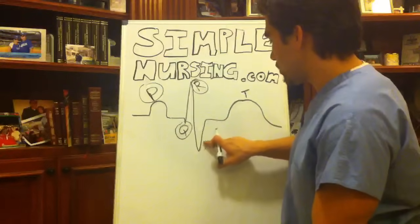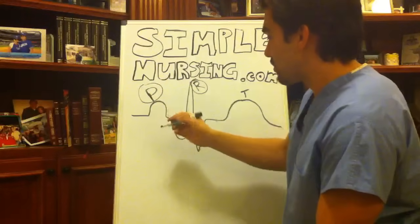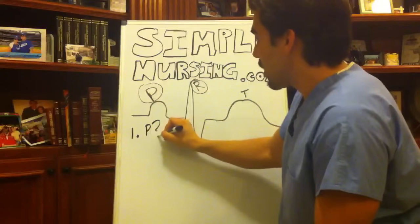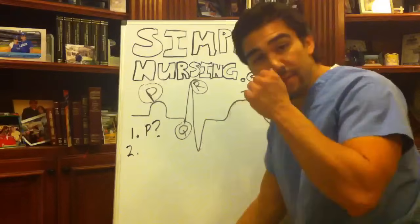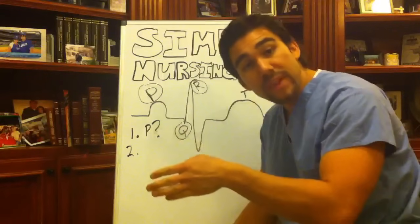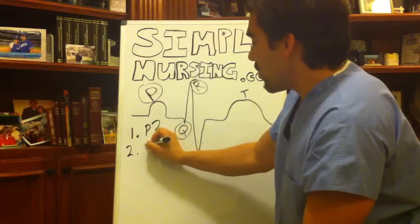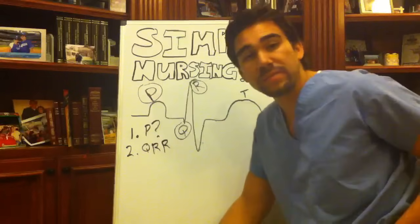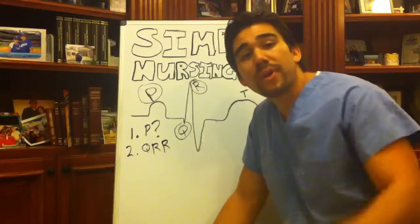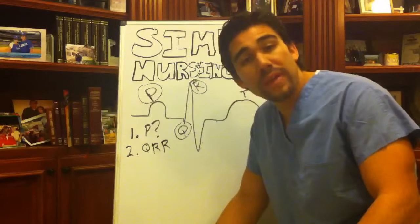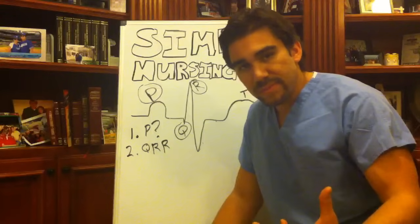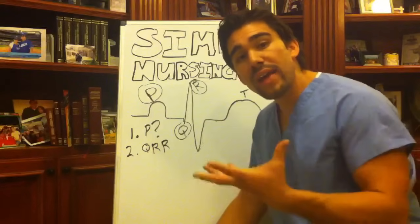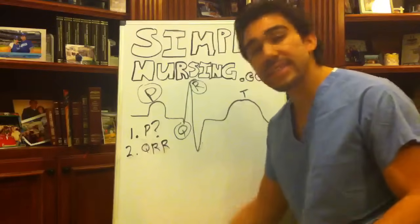So your first step in our five-step system is: are there any P waves? Can you identify a P wave? If so, yes — you're moving on to step number two. Step number two: are there any QRS complexes in the EKG? Is there a QRS? Are the ventricles depolarizing? Usually nine times out of ten, if the P waves are depolarizing, the blood is going to the ventricles. The atrium depolarizes, sending blood down into the ventricles. Ventricles swell, then they contract — so you'll probably see a QRS wave.